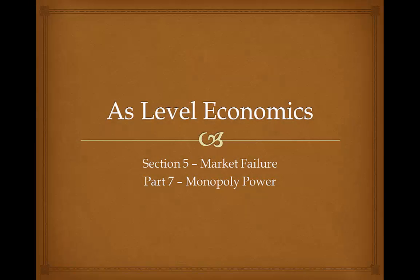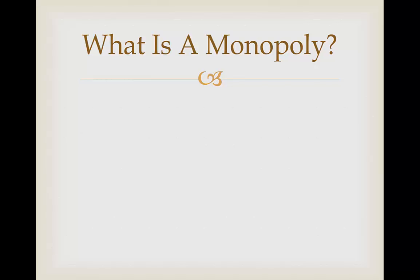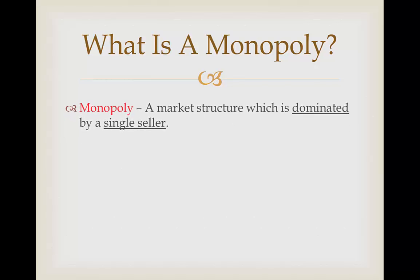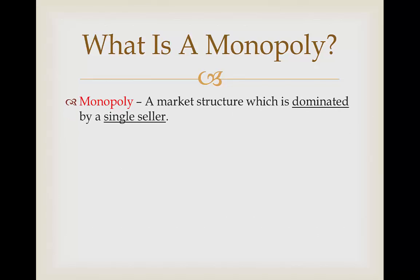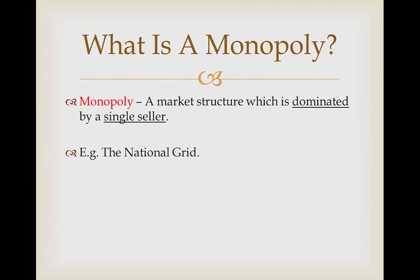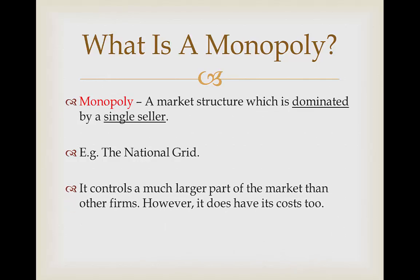Hello and welcome to the next lesson in our AS Level Economics course. Today we're going to be looking at Monopoly Power. A monopoly is a market structure which is dominated by only a single seller in the market. For example, the National Grid — they own a monopoly on the amount of electricity produced in the UK and control a much larger part of the market than other firms.